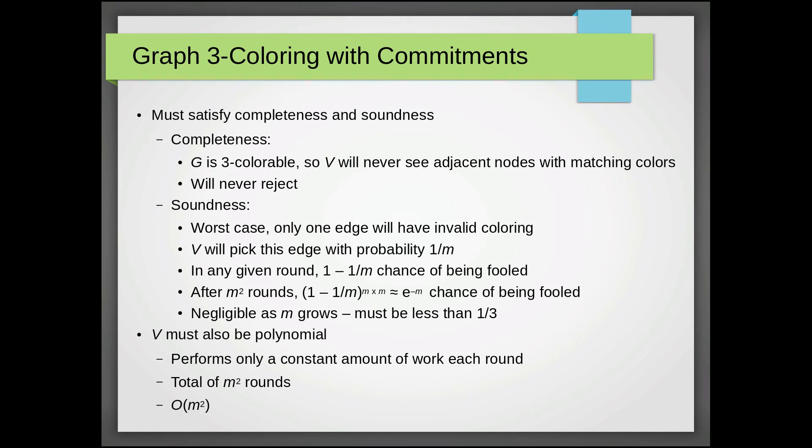So this means in any given round, V has a one minus one over M chance of being fooled by the prover. After M squared rounds, it has a one minus one over M to the M squared, which is approximately e to the negative M chance of being fooled every round. So note that this is negligible as M grows. So as M grows, this must be less than one third.